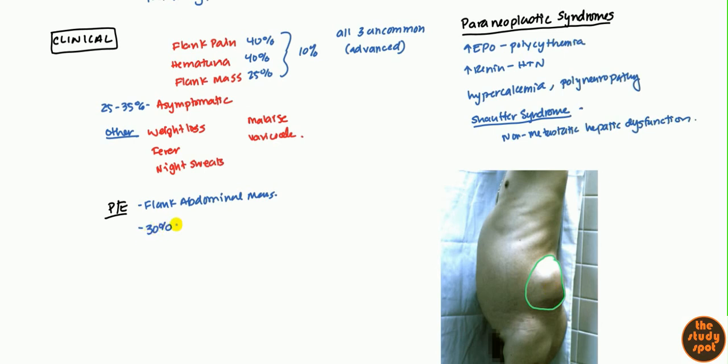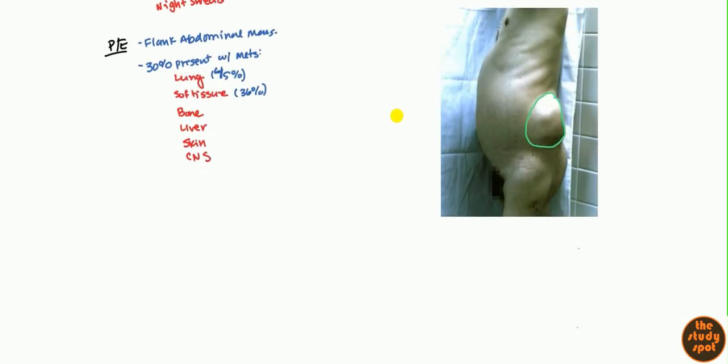Also, 30% of patients when they present, they present with metastasis. So that's why you want to look at the lungs which is 45%, soft tissue which is 36%. You also want to take a look for bone, liver, skin, and CNS. These are all locations where it can metastasize.